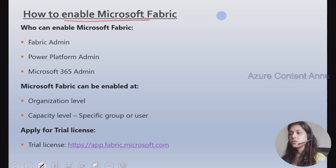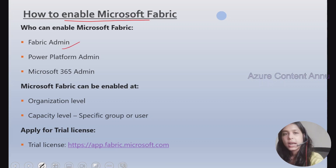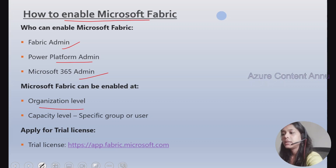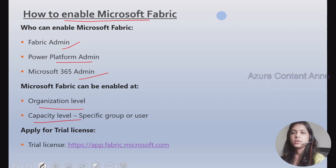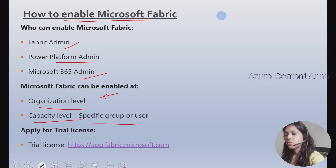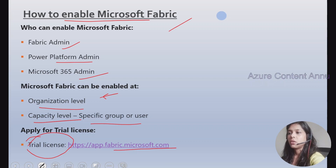Now, how to enable Microsoft Fabric: who can enable it for your organization? You can look for a Fabric administrator, Power Platform administrator, or Microsoft 365 administrator — you need any of these permissions to enable Microsoft Fabric. Microsoft Fabric can be enabled either at the organization level or at the capacity level, meaning you can give access to the whole organization or create a specific group or user and give access at that capacity level.